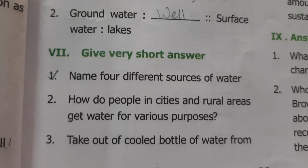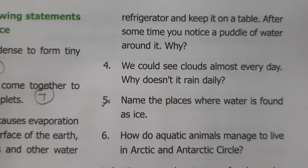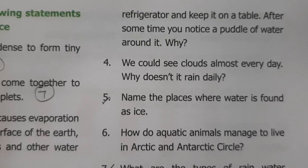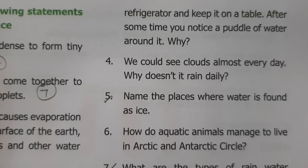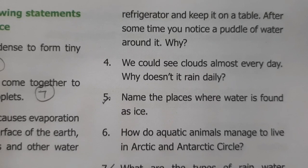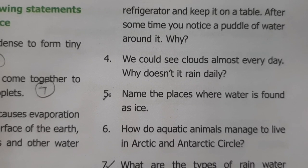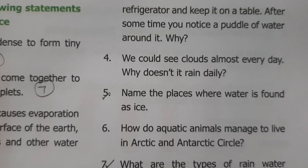Third question: a cooled bottle is taken from the refrigerator and kept on a table — a puddle of water forms around it. Why? Answer: the cool surface of the bottle cools the air around it and the water vapor of the air condenses, so after some time a puddle of water is noticed around the bottle.